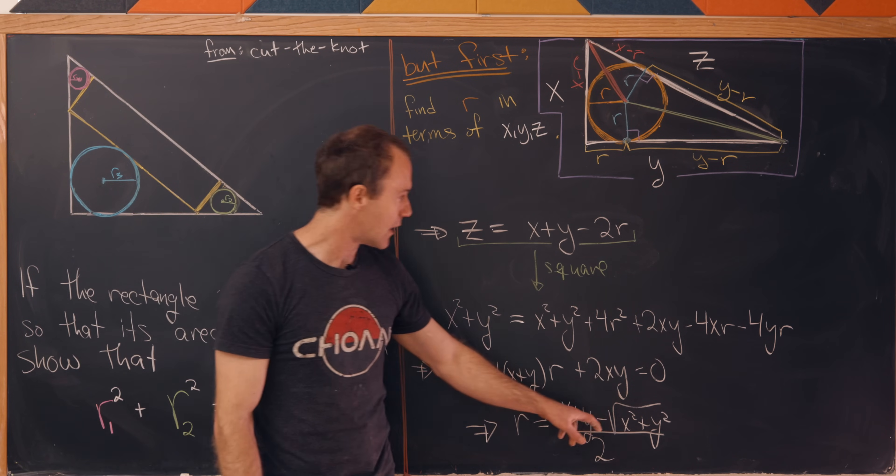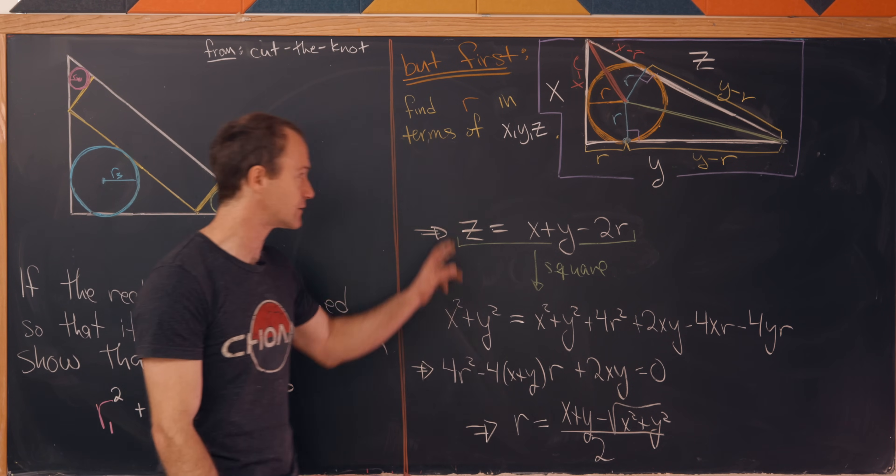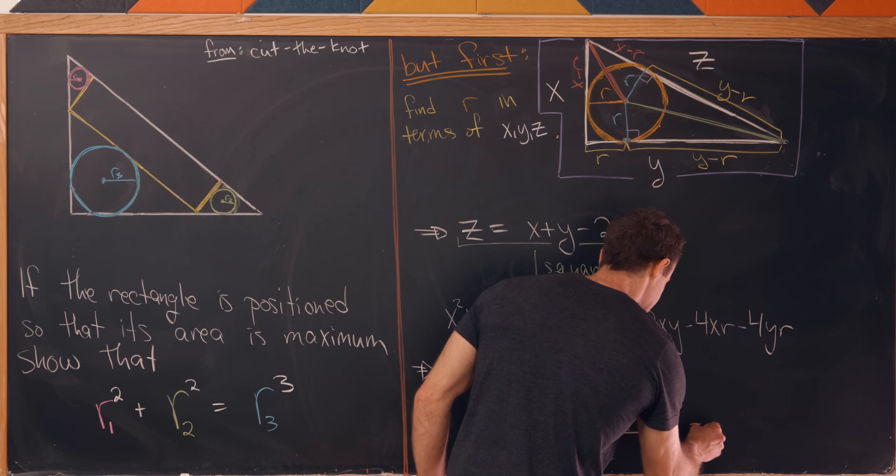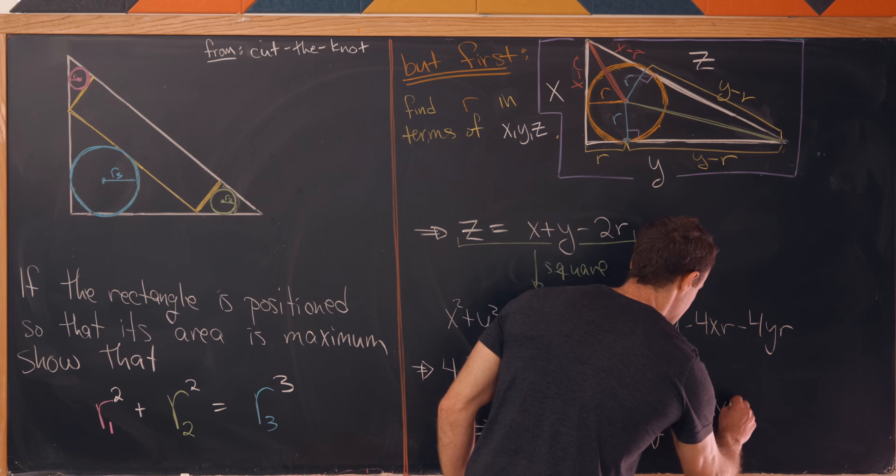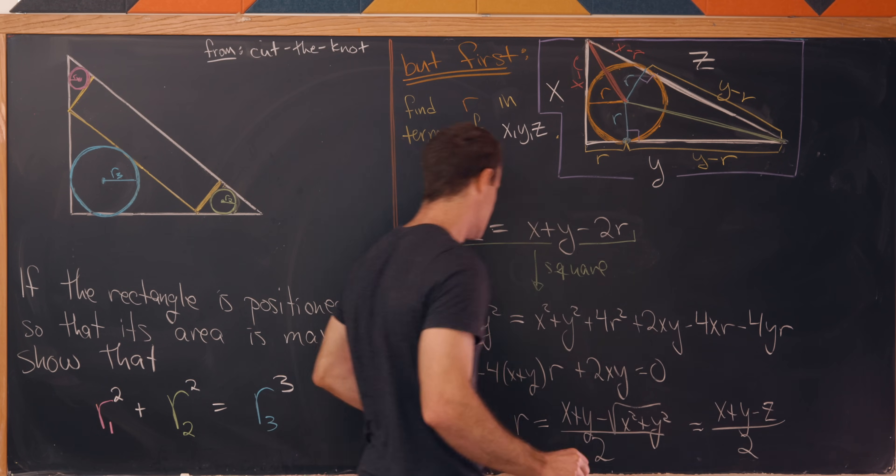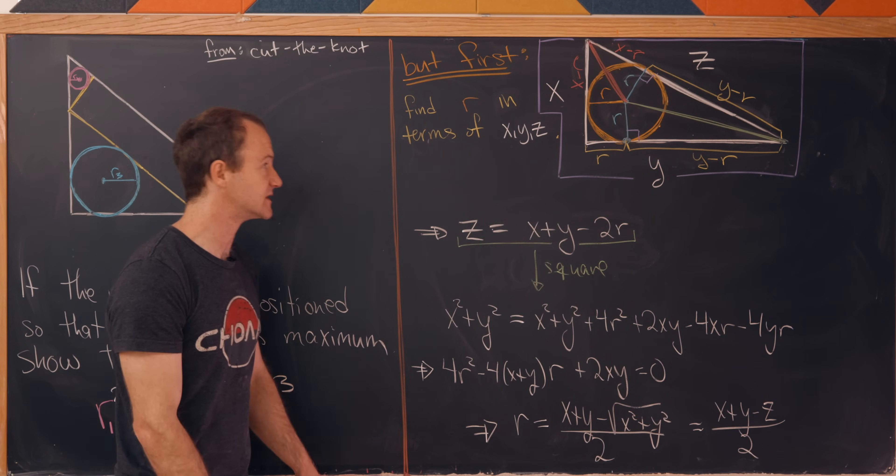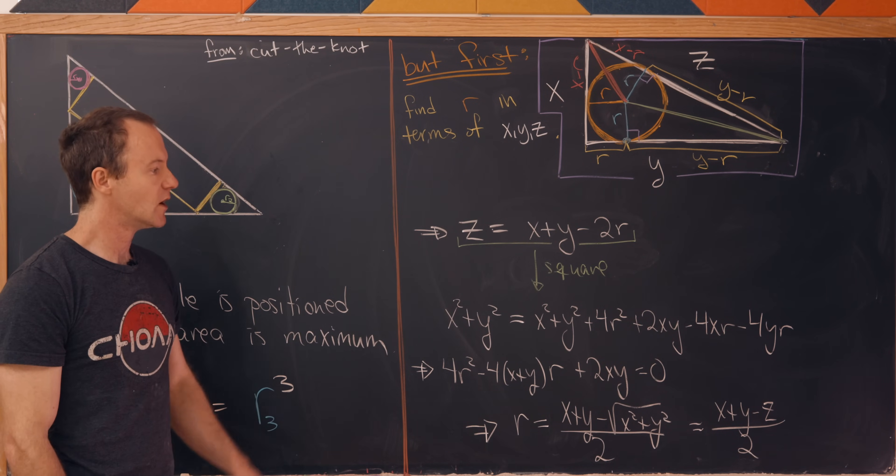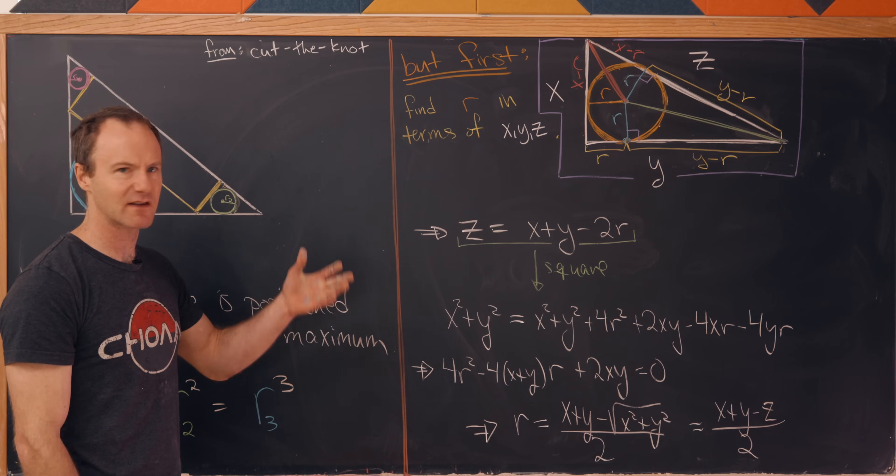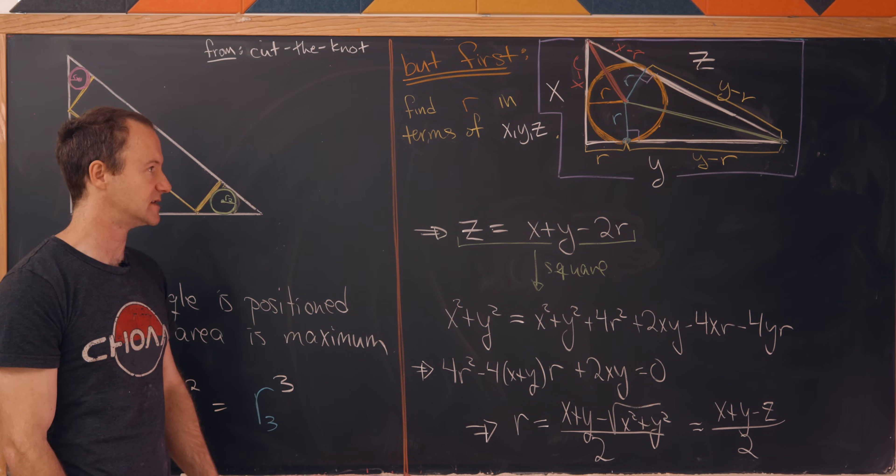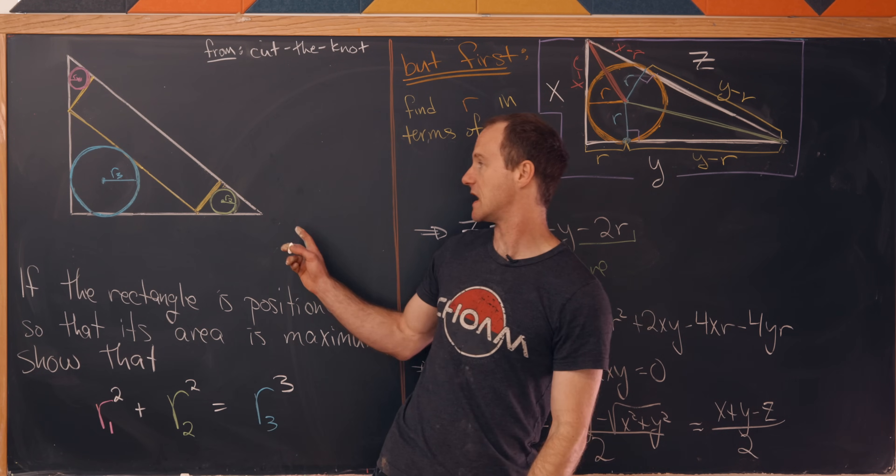But now we know that x squared plus y squared equals z squared by the Pythagorean theorem. So this simplifies to x plus y minus z over 2, and that's our radius of our inscribed triangle. Now that we've got that, let's keep it in the back of our minds as we move on to our main problem.